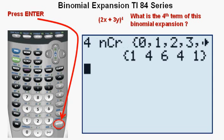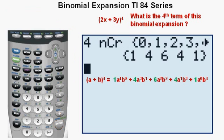We see the binomial coefficients for the 5 terms in the expansion. Here is the binomial expansion using the number of terms. The coefficients are in green. This is the 4th term, 4A to the 1st power, B to the 3rd power.